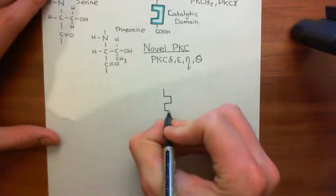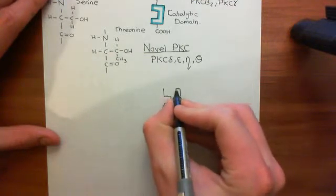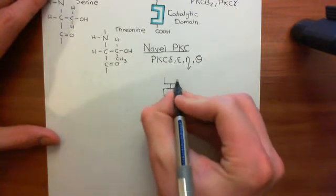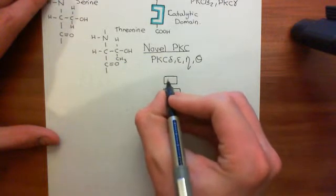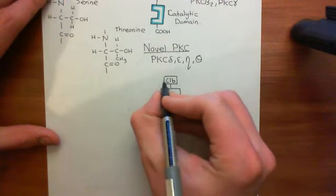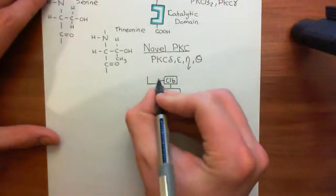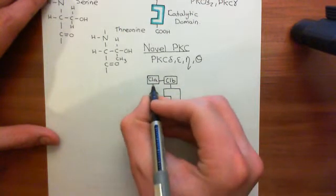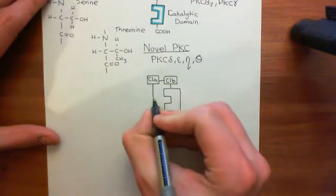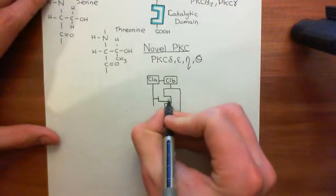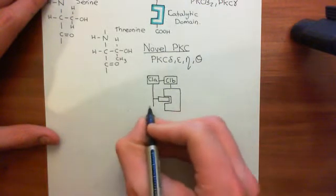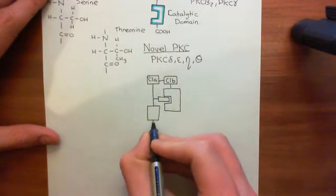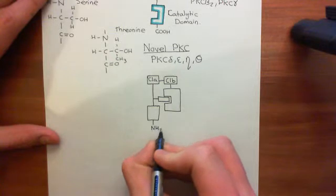We'll start by drawing the catalytic domain, which is the domain capable of adding phosphate groups onto serine and threonine residues. Then, instead of having a C2 domain coming right off this, we go straight into our C1B domain, and then we have our C1A domain — they're still nicely in tandem, meaning they follow one another. Then you have the pseudosubstrate, and then this final domain known as the novel C2 domain, with the amino-terminal domain down here and the carboxylic acid terminus here.